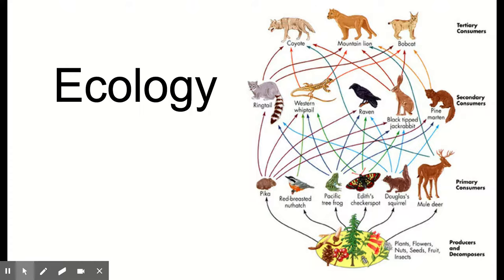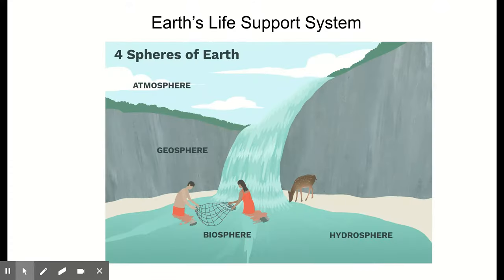Starting with the physical setup of earth, we have earth's four spheres that contribute to their life support system. The first sphere is the atmosphere, a thin spherical envelope of gases surrounding the earth's surface. This includes nitrogen, oxygen, and carbon dioxide — the gases that are necessary for life on earth.